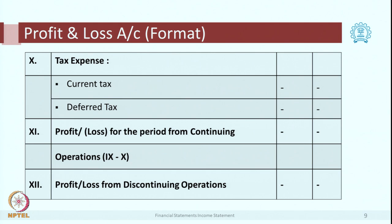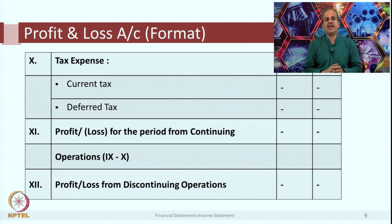From item 5 profit before exceptional and extraordinary items, we deduct exceptional items and extraordinary items to get item 9, which is profit before tax. Then item 10 is tax expense — we deduct current taxes and deferred taxes to get profit or loss for the year from continuing operations.